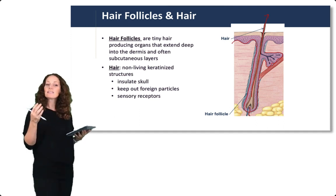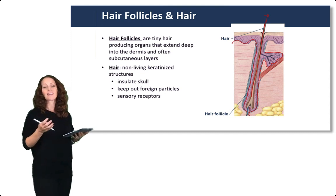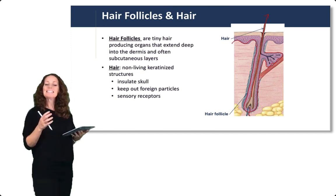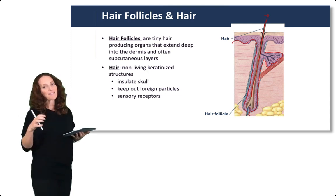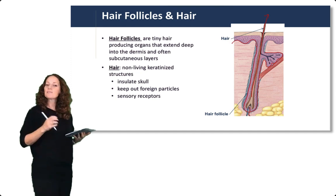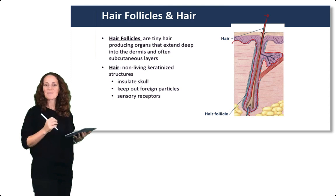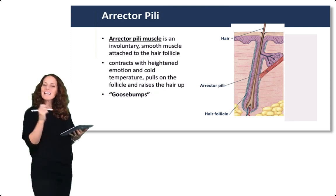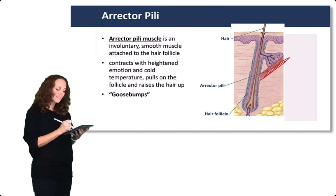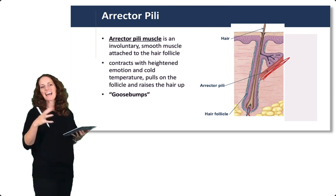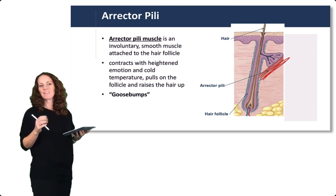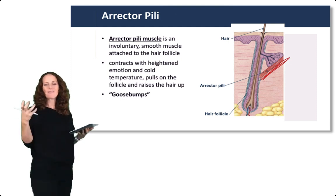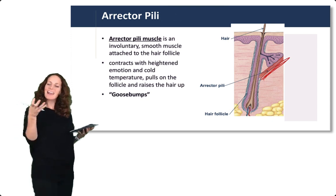Hair itself is a non-living keratinized structure. It insulates the skull, keeps out foreign particles, and at the very base of hair there are sensory receptors such that when hair is moved it triggers sensation within the skin. There is a tiny smooth muscle attached to the hair follicle pictured here, which is called the erector pili — erector for straightening and pili for hair. It makes our hair stand up.